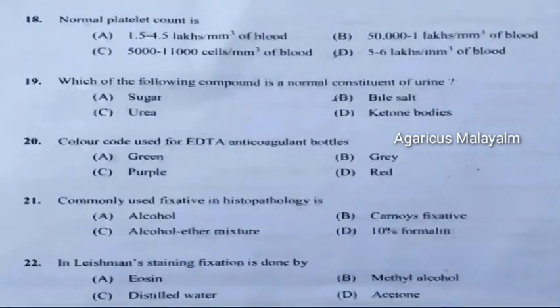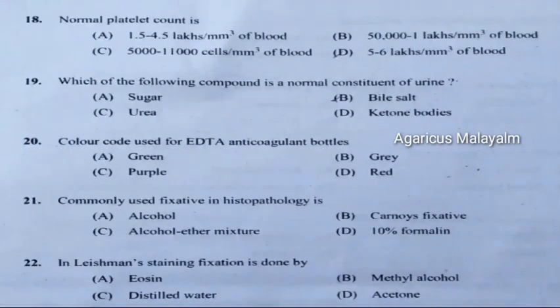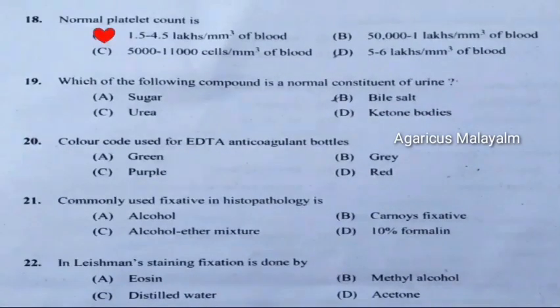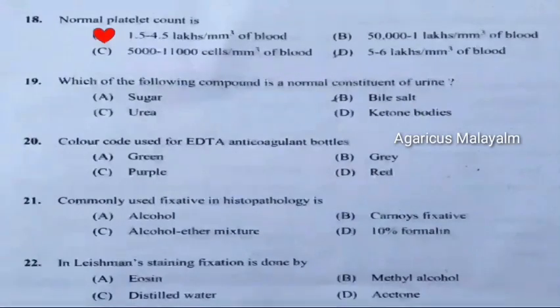Eighteenth question: Normal platelet count is. Correct answer is Option A: 1.5 to 4.5 lakhs per millimeter cube of blood.